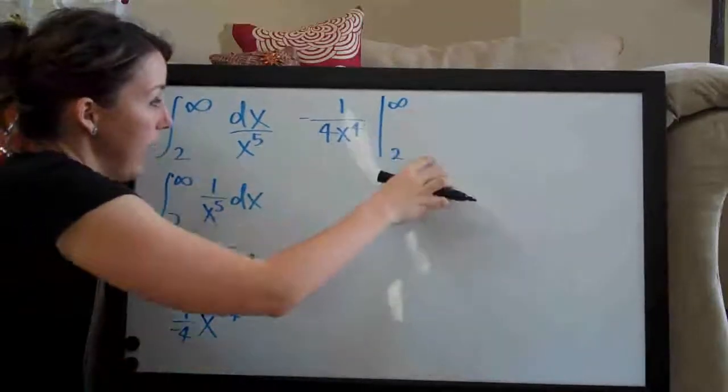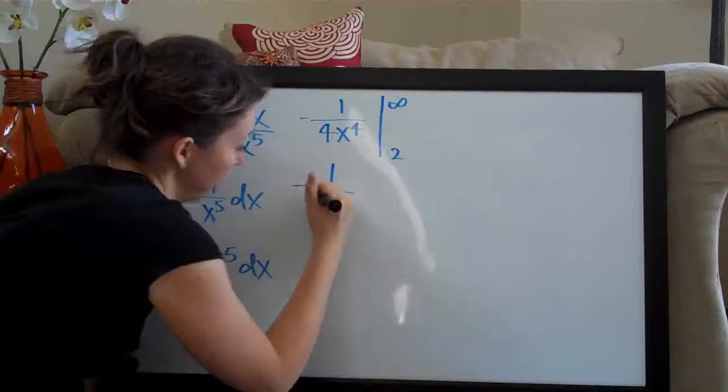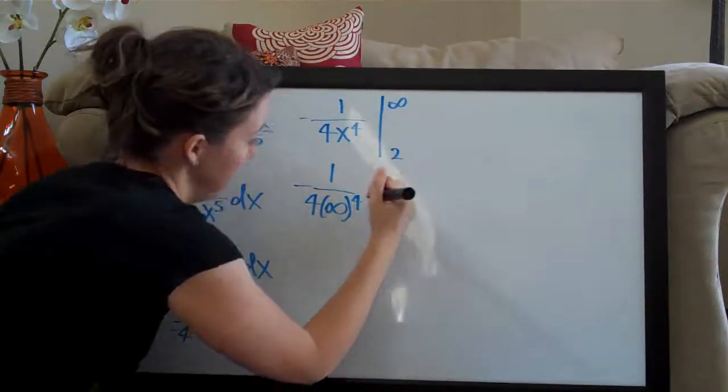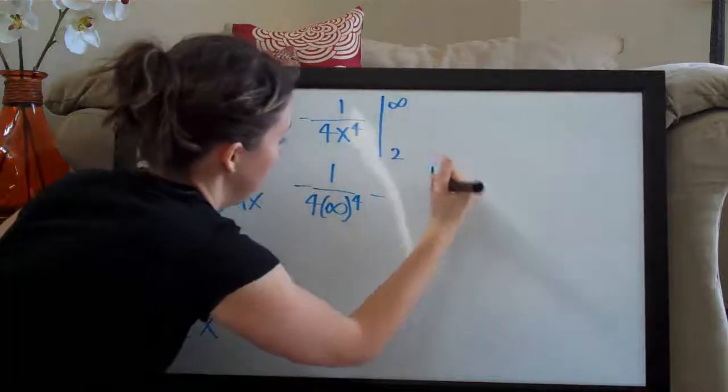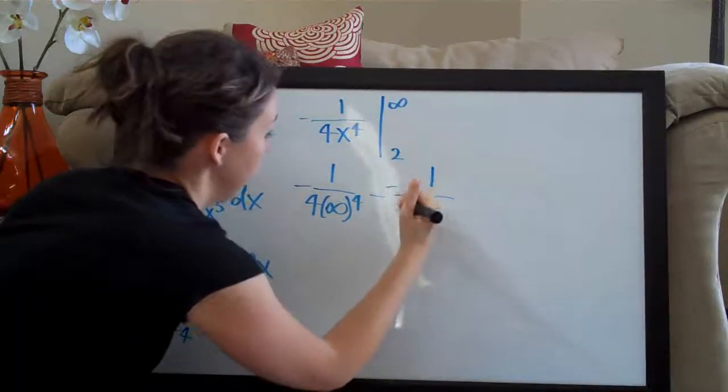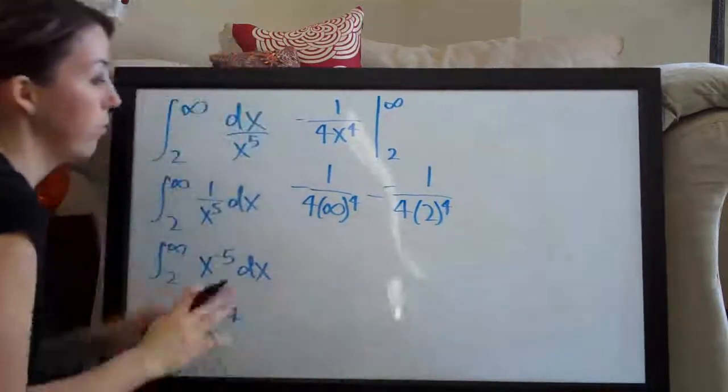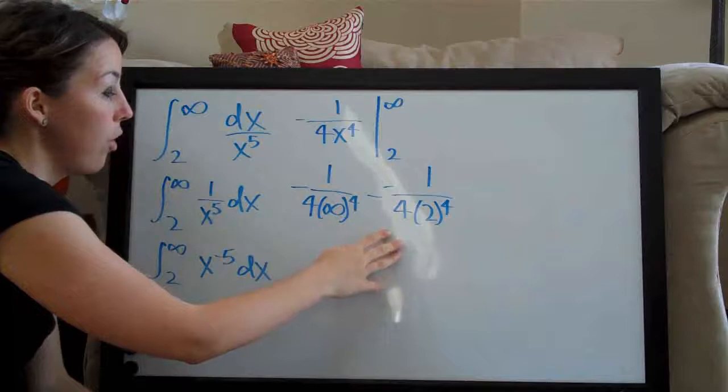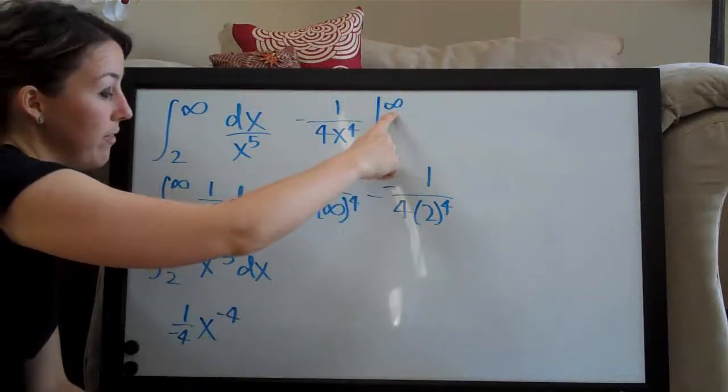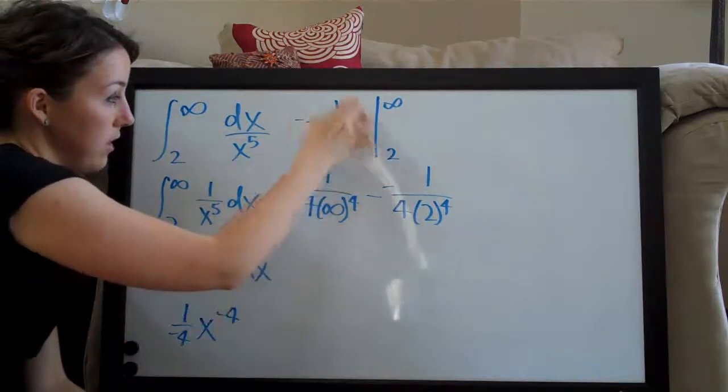So the way that you do that, let's just go ahead and write it out: negative one over four infinity to the fourth minus negative one over four times two to the fourth. Okay, so you always plug in the term that's on the top here, so we've got infinity. You plug that in first to everything that's included here.